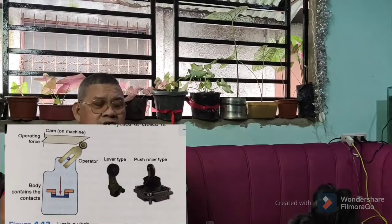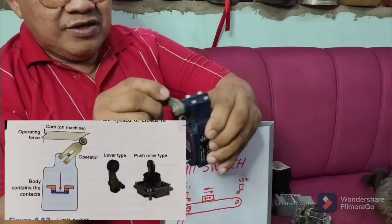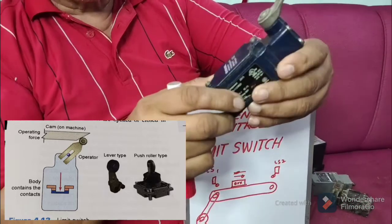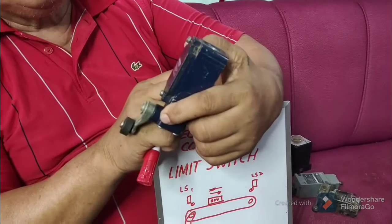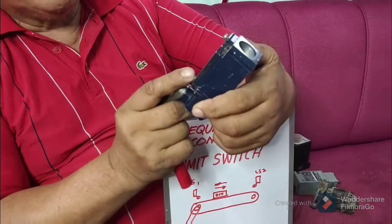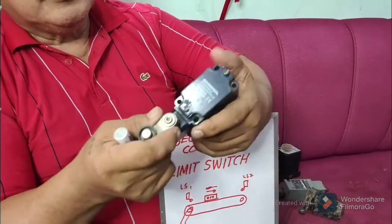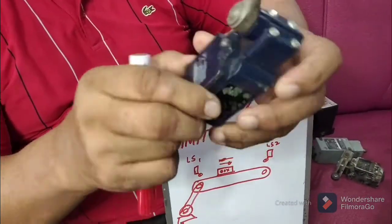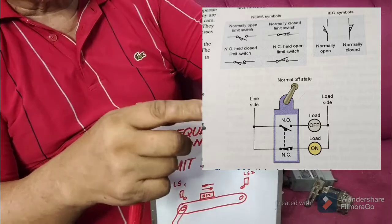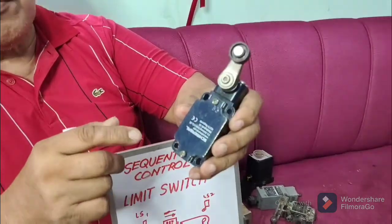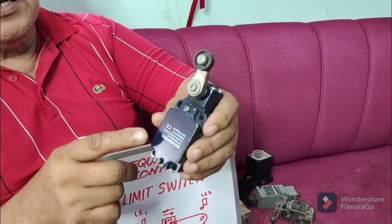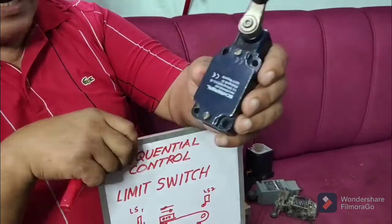In place of a limit switch, we can also use a timer. Now, I have here a limit switch — this is your limit switch, roller type. This is a very good brand, made in Germany. It is also very expensive. If you open what is inside, of course there is still a contact — a normally closed and a normally open contact — and usually in a limit switch you have a four terminal.